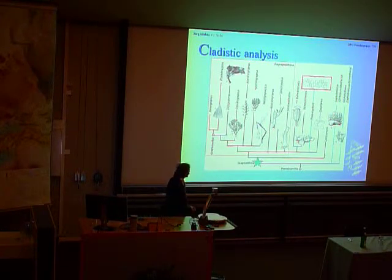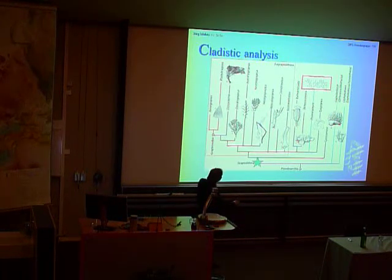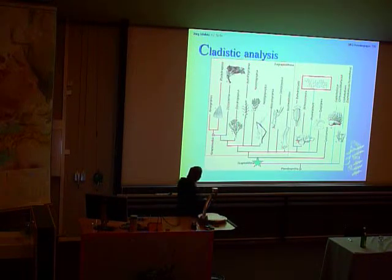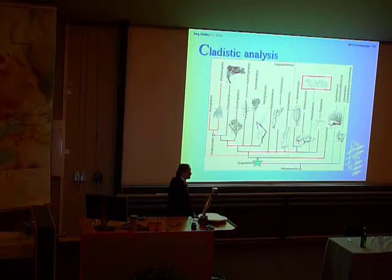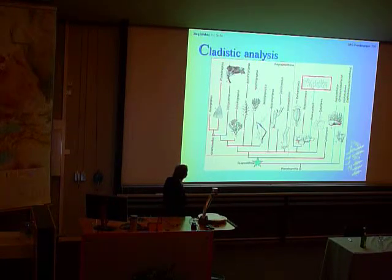We can now see that the pterobranch actually should be differentiated in a different way. We have one group here that includes the modern Cephalodiscus, and we have the second group, that we now call the Graptolithina, the usual graptolites of your fossil books and fossil collections.